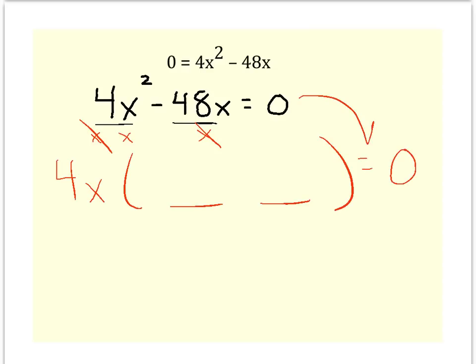Do not forget to bring down the equal zero because that's just a reminder that you have to have equations, you have to solve them because it says solve by factoring. So let's see, where are we? Filling in what's left. 4 times 1 gets me back to 4. How many x's do I need?